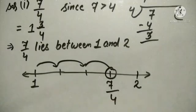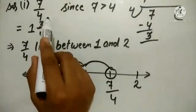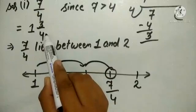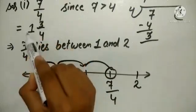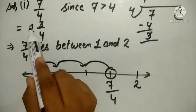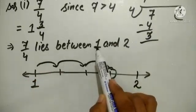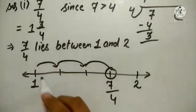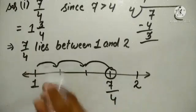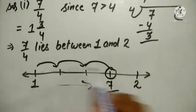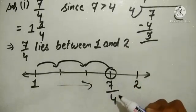To summarize: first check whether the numerator is greater than or less than the denominator. Since 7 is greater than 4, convert to mixed number form. If the whole number part is 2, then the number lies between 2 and 3; but here it is 1 and 3 over 4, so 7 over 4 lies between 1 and 2. Then count to the 3rd point from 1 moving right — that is the position of 7 over 4.